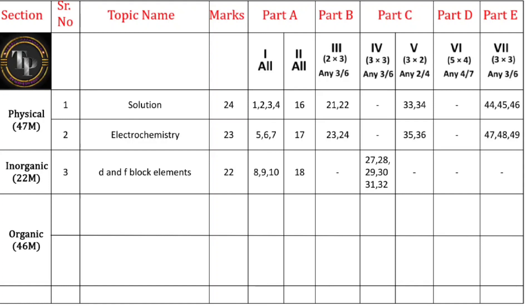Talking about organic chemistry — totally you will get 46 marks. Two chapters are there for midterm: Haloalkanes & Haloarenes, and Alcohols, Phenols & Ethers. Haloalkanes & Haloarenes will give a total of 20 marks: two MCQs, one fill in the blanks, one two-mark question, and three five-mark questions. Question numbers 37, 38, and 39 all belong to Haloalkanes & Haloarenes.